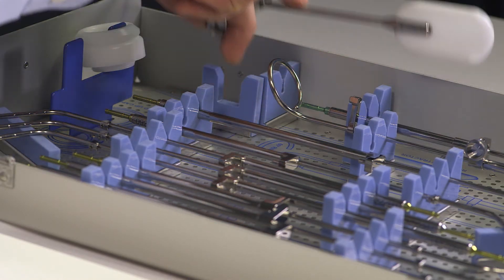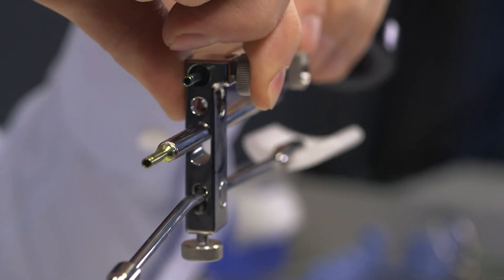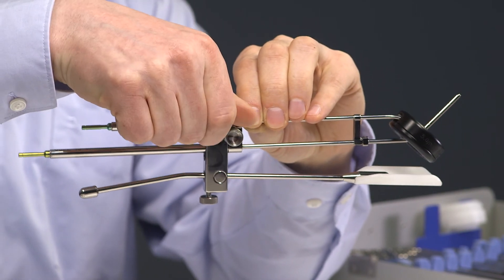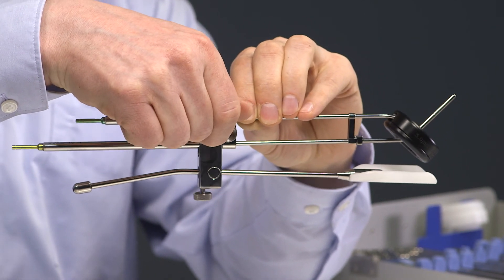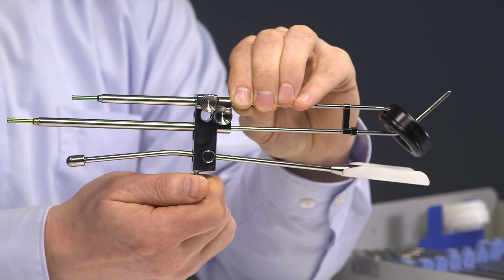In case the rectal retractor is used, it's simply guided over the tubes and locked into place with the side screw. The angle can be adjusted with the lower screw.